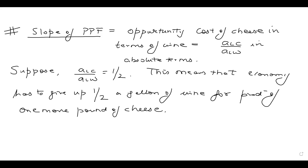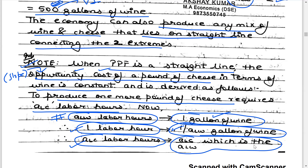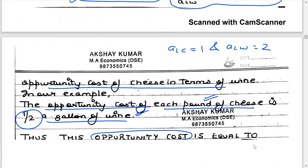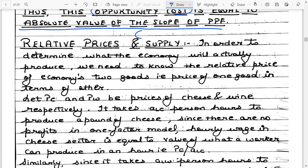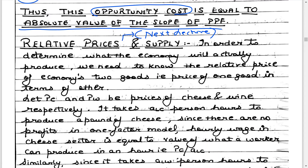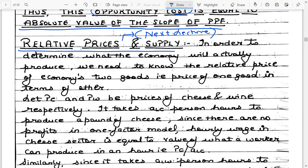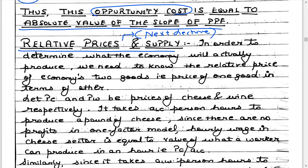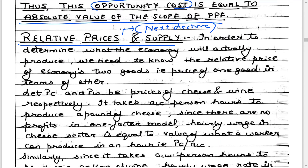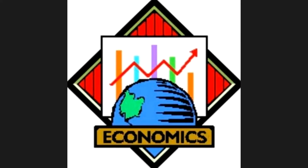This is where we stop in this particular lecture. The objective was to introduce the Ricardian model of comparative advantage. In the next lecture, we will continue with this model and talk about relative prices and supply. Any doubts can be sent to the email provided.